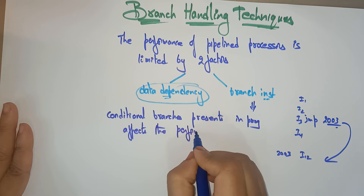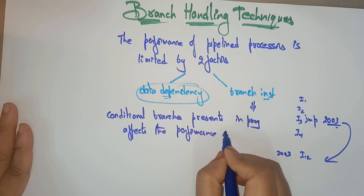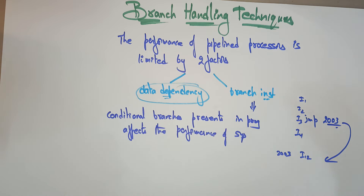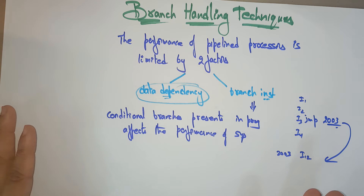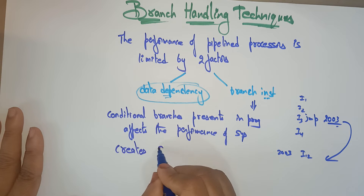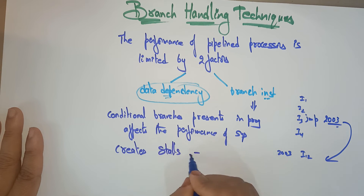How does it affect the performance of a system? Because whenever a condition occurs, the controller has to jump to that location. We don't know whether the condition is satisfied or not, but it is going to jump to that location. If the output is wrong, it comes back to that position. So it is going to affect the performance of a system and it is going to create stalls — meaning it creates awaiting, so the waiting time increases.